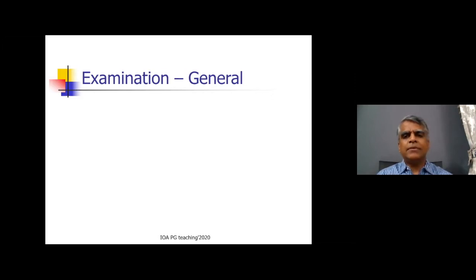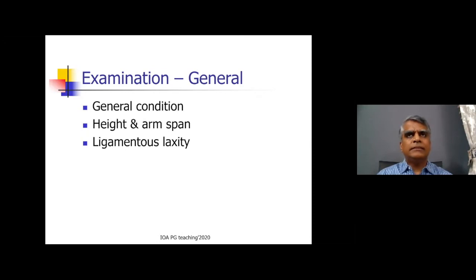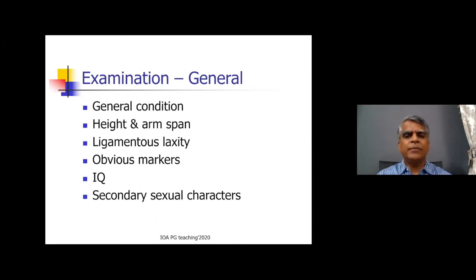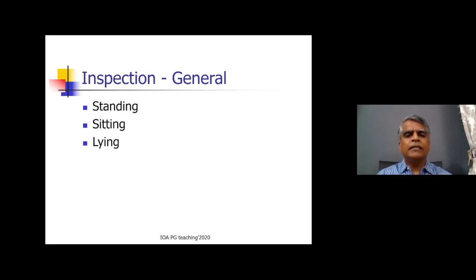Coming to general examination, you examine the patient as a whole - general vitals and everything. You have to measure height and arm span, check ligamentous laxity, note the vitals criteria, and whether there are any obvious markers. In a pediatric age group you must mention IQ and secondary sexual characters whether they have developed adequately. If there is anything like a torticollis, mention it because torticollis is often associated with developmental dysplasia of the hip. It is better to have a general look at the patient.